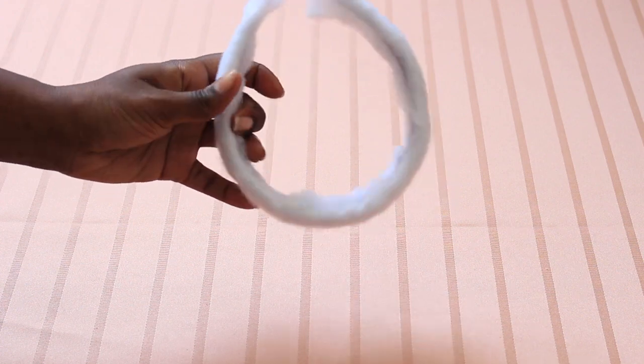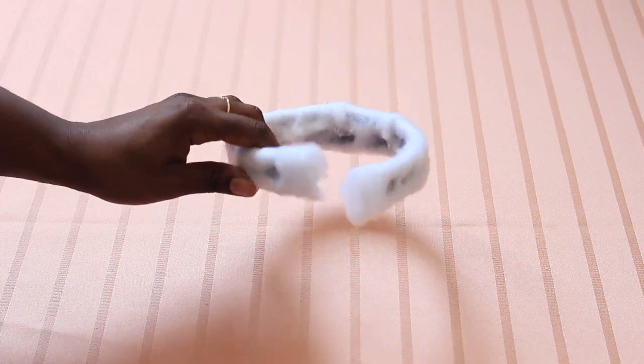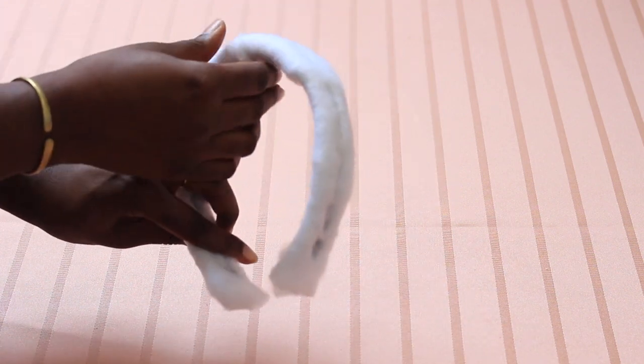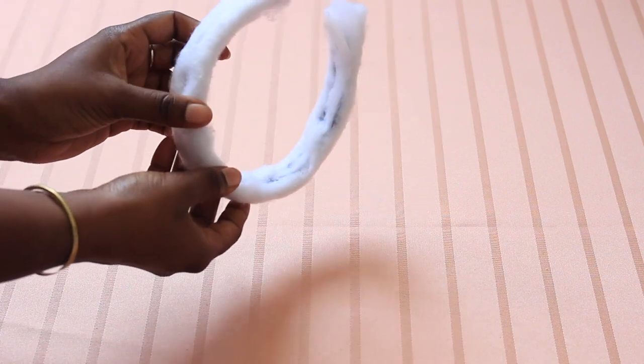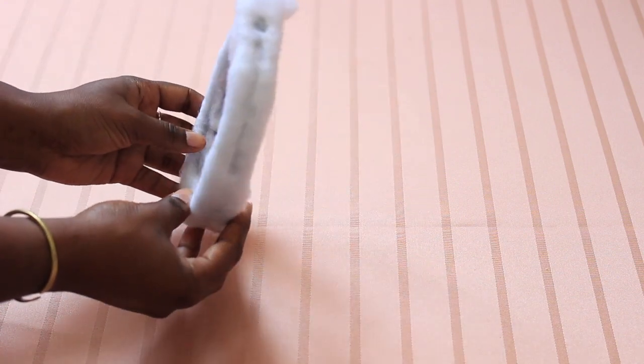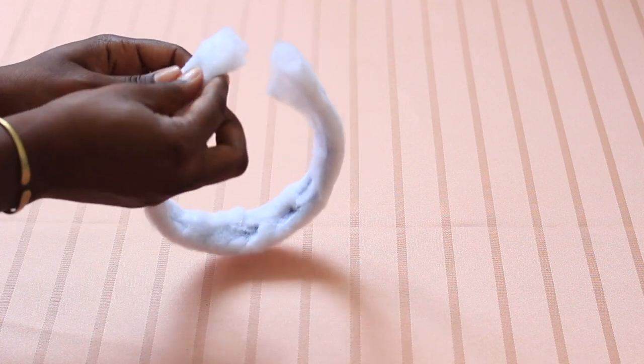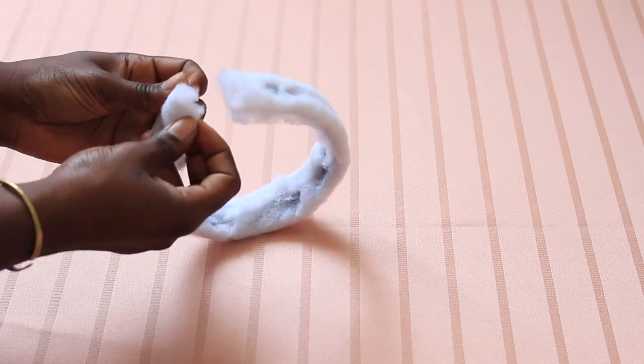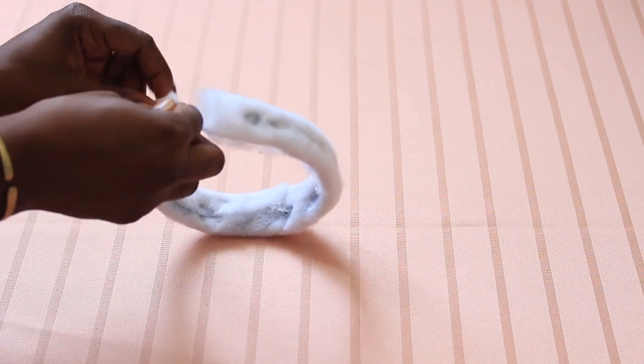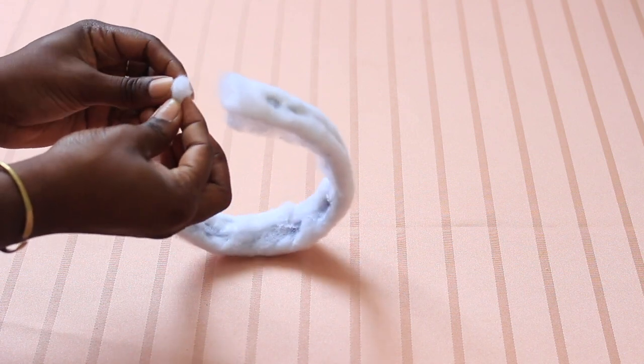Next, we're going to add on that third piece of batting. As you can see, I already glued it on my headband, but instead of cutting off that excess batting at the end, I just went ahead and started to glue around it and glue down the sides to basically make a full padded headband.